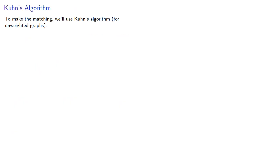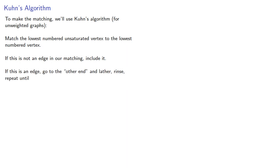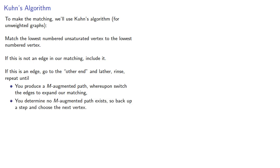To make the matching, we'll use Kuhn's algorithm for unweighted graphs. We'll match the lowest-numbered unsaturated vertex to the lowest-numbered vertex. If this is not an edge in our matching, include it. If this is an edge, go to the other end and lather, rinse, repeat until you produce a M-augmented path, whereupon switch the edges to expand our matching, or you determine no M-augmented path exists, so back up a step and choose the next vertex. Remember, this is a depth-first search. And in all cases, lather, rinse, repeat.